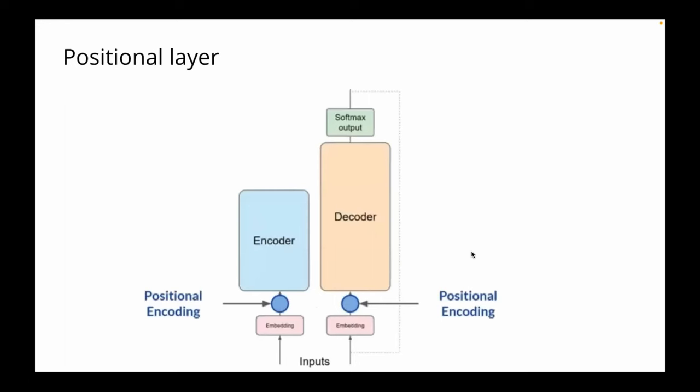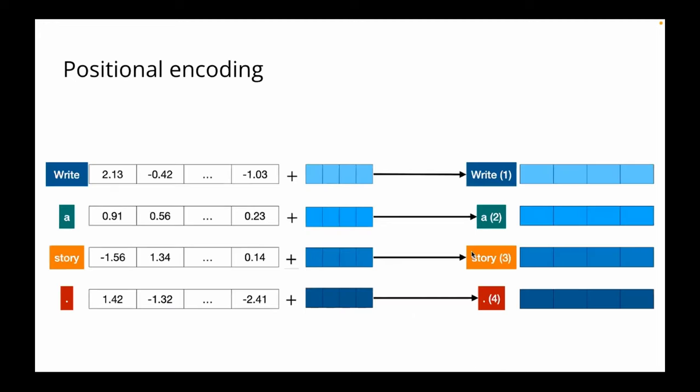Then you have positional encoding. The crux of the transformer architecture is that it tries to process your input in parallel. And because of that, you need to know the position of your tokens or words — otherwise the model will end up hallucinating or saying some gibberish. That's why you need a way to capture the position of those words, because the transformer processes them in parallel.